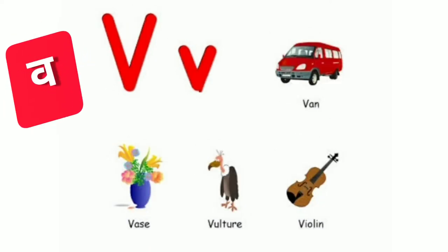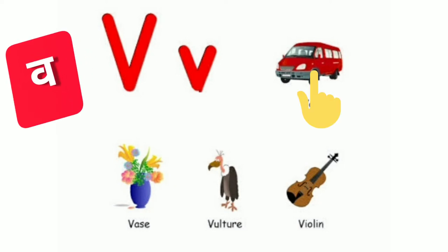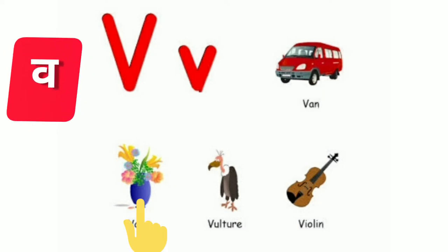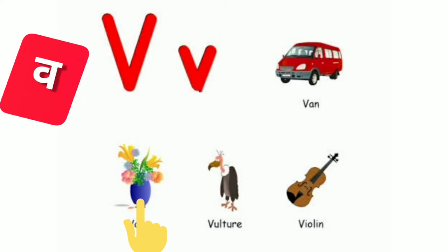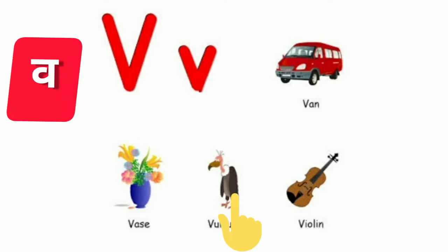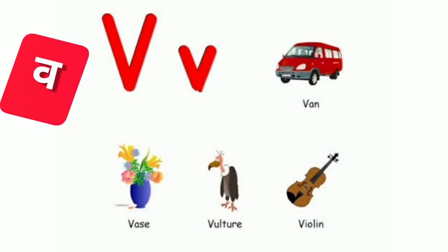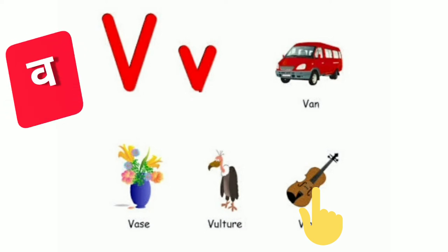The next word is V. V sound is V. Vase. Vulture. And violin.